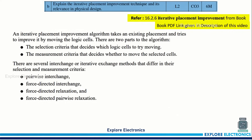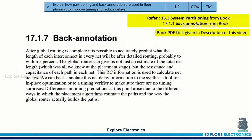Then explain the iterative placement improvement technique with its relevance in physical design. The iterative placement algorithm needs to be explained — how it is relevant in physical design. A brief answer is given here from the textbook; please refer to it for a complete answer. Then: how partitioning and back annotation are used in floor planning and how to improve timing and reduce delays — this is the back annotation topic from the textbook.